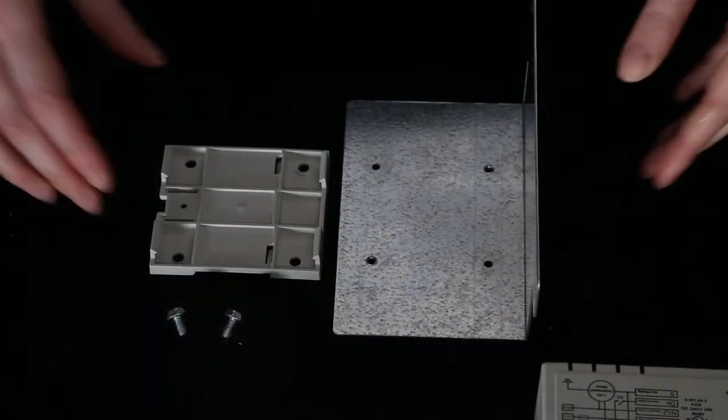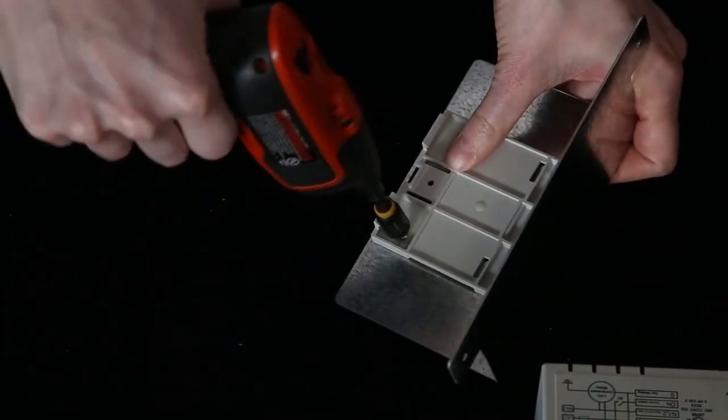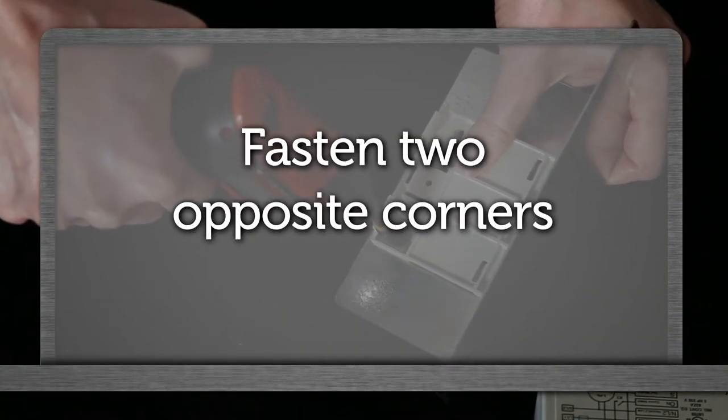The first step is to mount the plastic mounting clip to the metal bracket with two of the 5/16 hex head screws. Only opposite corners need to be screwed down.